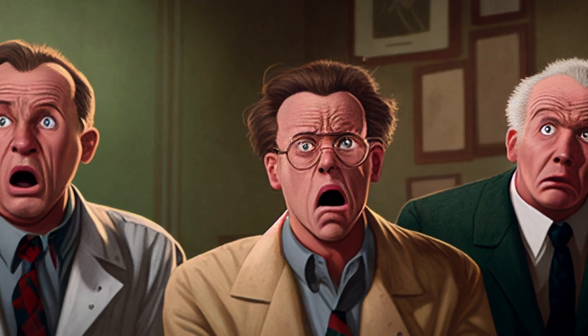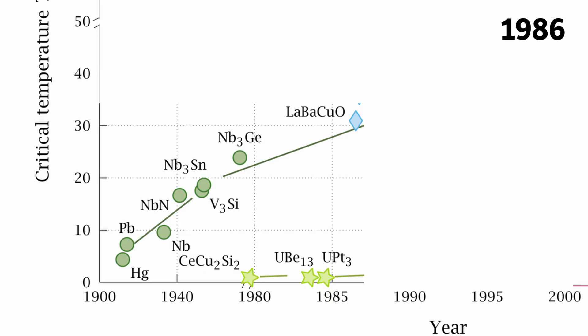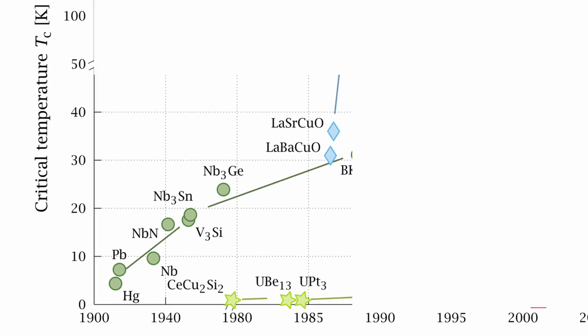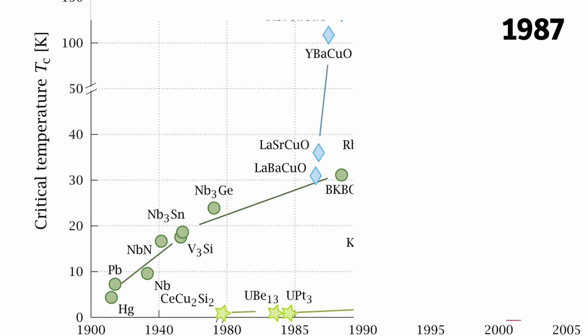So imagine the shock of the scientific community when in 1986, a high-temperature superconductor at 35 Kelvin was discovered. And just a year later, in 1987, a critical temperature of 93 Kelvin was achieved. Something that seemed clearly impossible from the theory we just learned.